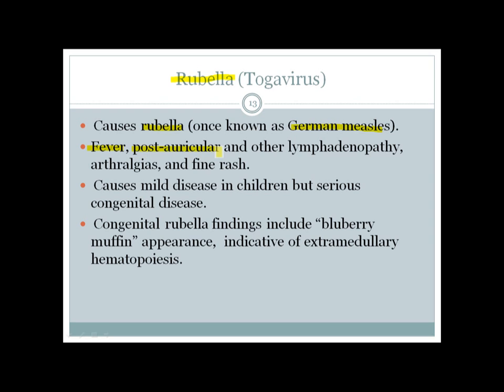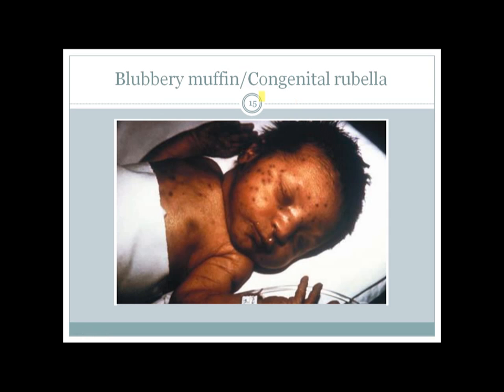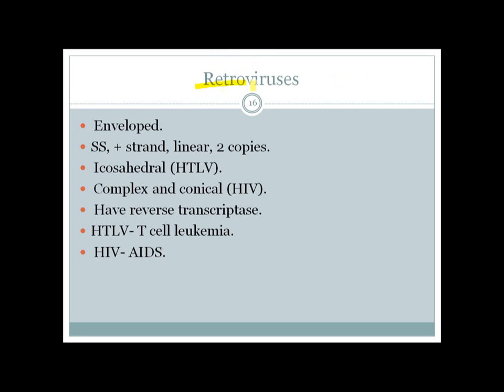In children rubella is mild, but if a fetus is infected in utero it can cause serious congenital disease. Congenital rubella findings include a blueberry muffin appearance, which is indicative of extramedullary hematopoiesis. Images show the rubella rash in children, and palpation may reveal post-auricular lymphadenopathy. A child with congenital rubella may show the blueberry muffin appearance.